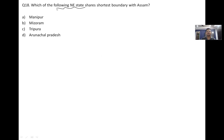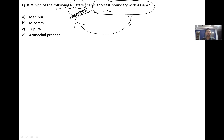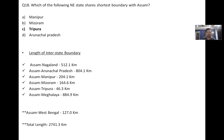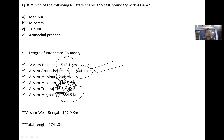Which northeastern state shares the shortest boundary with Assam? The answer is Tripura. For reference, the interstate boundary lengths with Assam are: Nagaland 434 km, Manipur 500 km, Mizoram 164 km, Tripura 46.3 km (shortest), and Meghalaya 854.9 km. So Assam-Tripura shares the shortest interstate boundary.